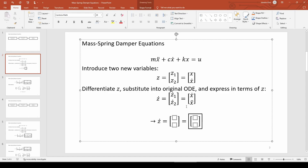We need to express x dot and x double dot in terms of z1 and z2. Notice that we originally defined z2 equals x dot, but we also said when we differentiated z that z1 dot equals x dot. Let's write that in below.